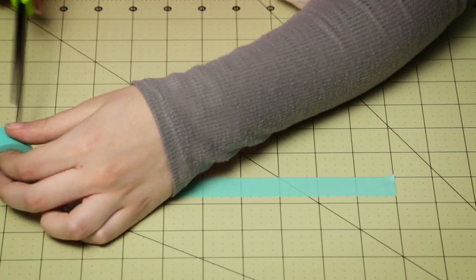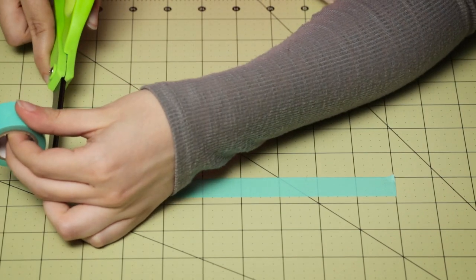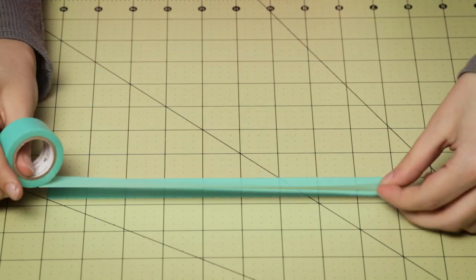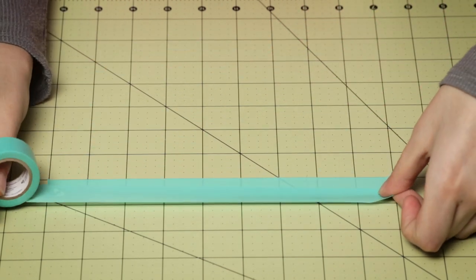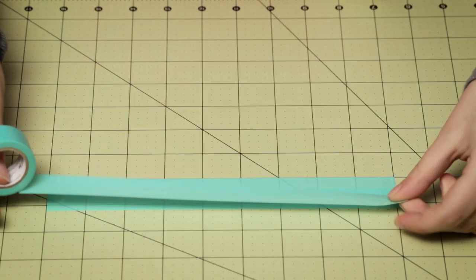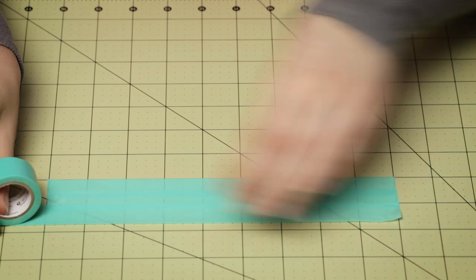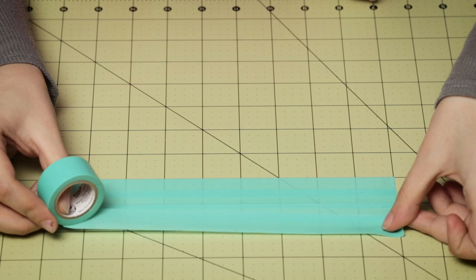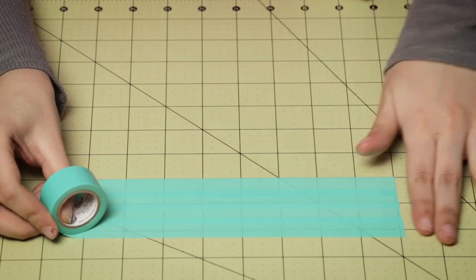And I'm just going to use my scissors to cut just like that. And now we're just going to continue to layer these on top of each other until you get to two and one-fourth inches. So right there.